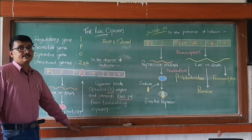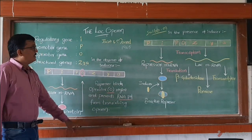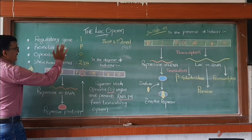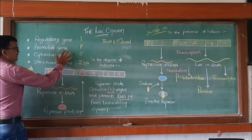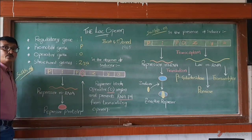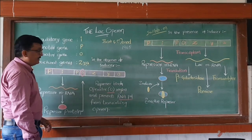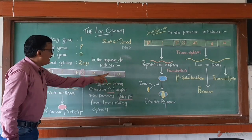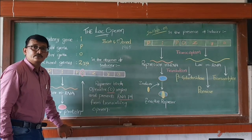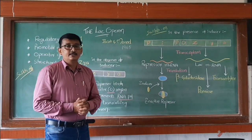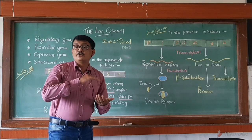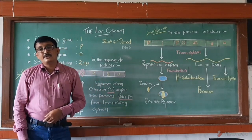There are different types of genes in this operon. These are the regulatory gene (I), promoter gene (P), operator gene (O), and structural genes Z, Y, and A. These genes are clustered together in a specific arrangement, and that is called an operon — a functional unit of DNA.